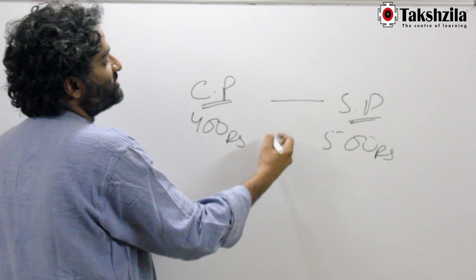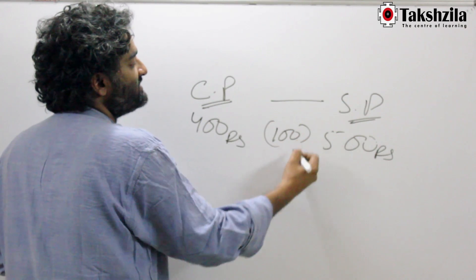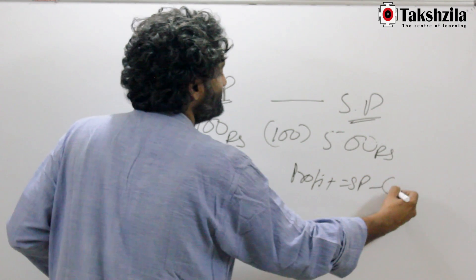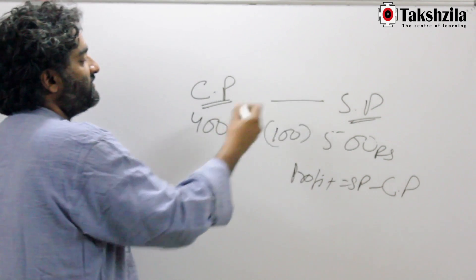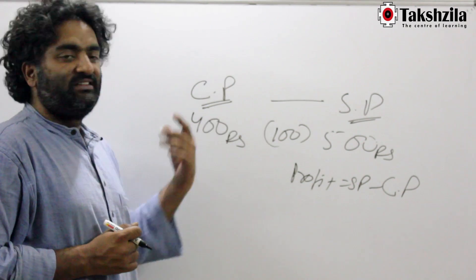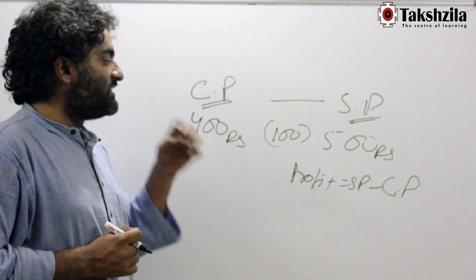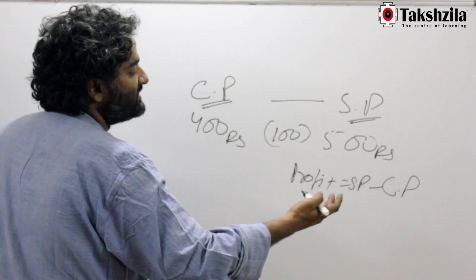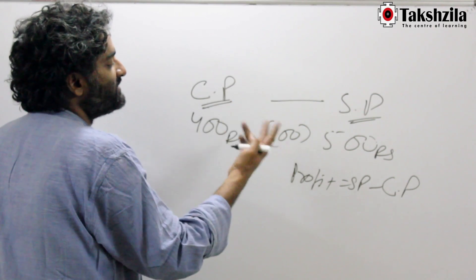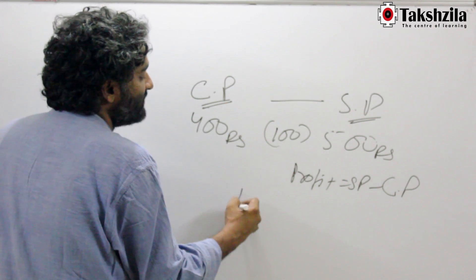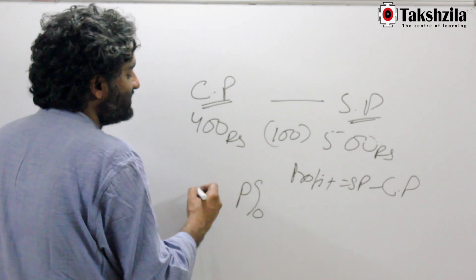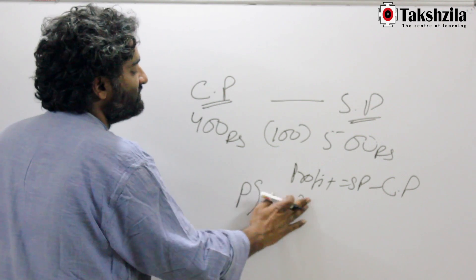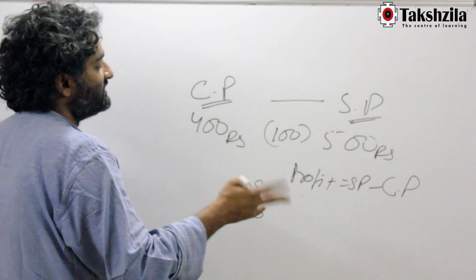This difference between the selling price and the cost price, in this case which is 100 rupees, is called the profit. So the profit is SP minus CP. In this case, the profit is 100, which is easy enough. The next term that comes in is what is the profit percentage? So profit percentage means profit as a percentage of the cost price. Remember, percentage connects two numbers only.